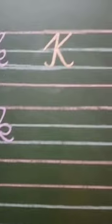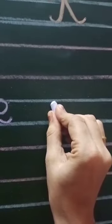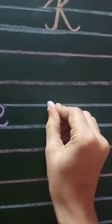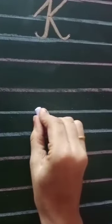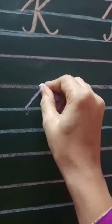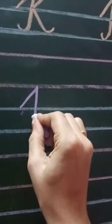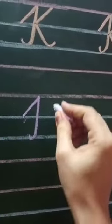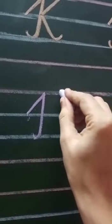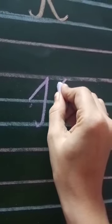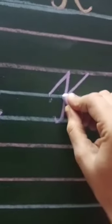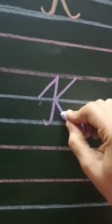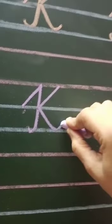Now is the turn for capital K. For capital K, start from the upper blue line. From the upper blue line, make a slanting line, then one, then one and turn back. Then from here till the center of the line, make a slanting line, and again a slanting line outside and leave.